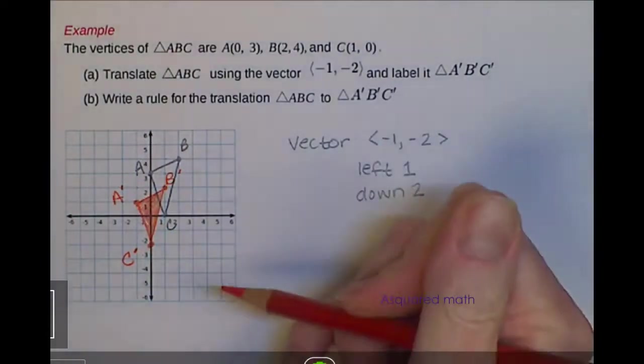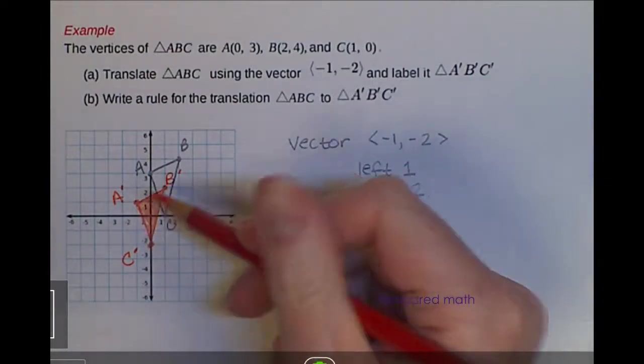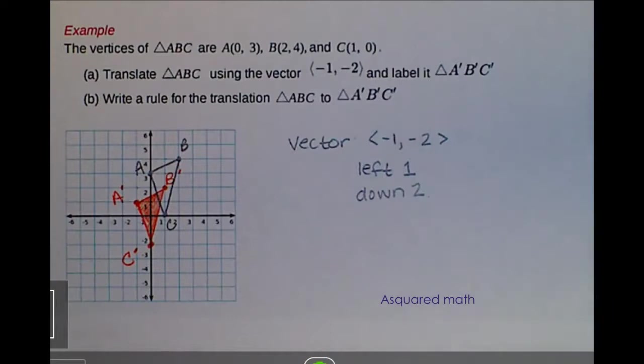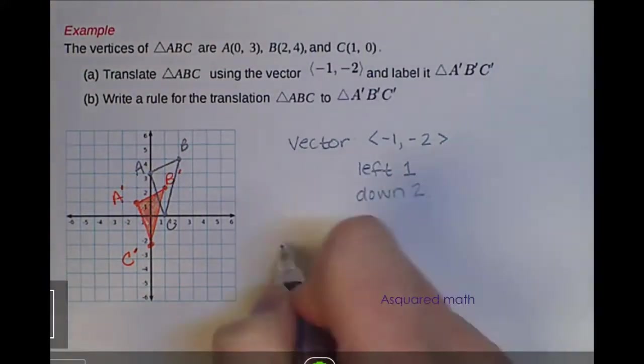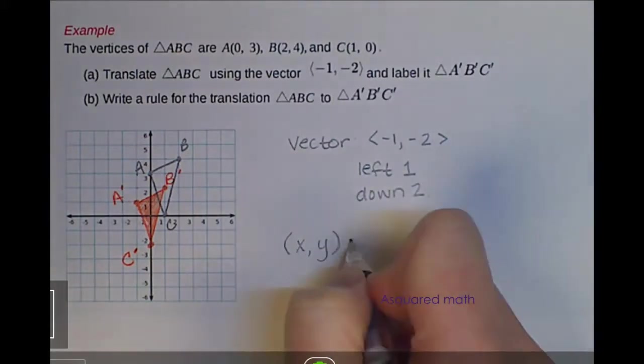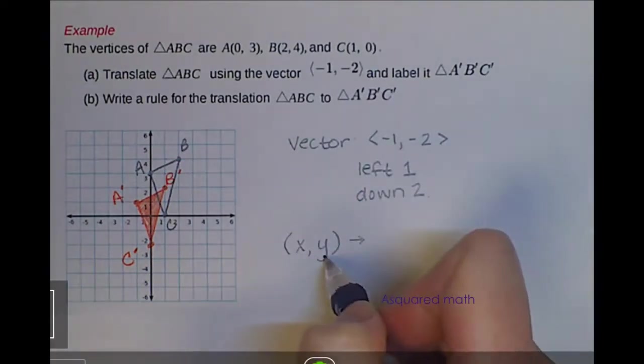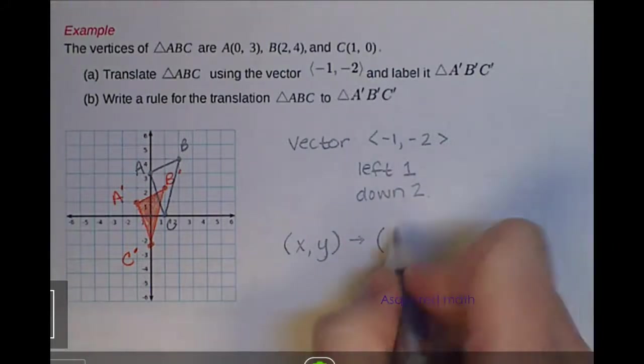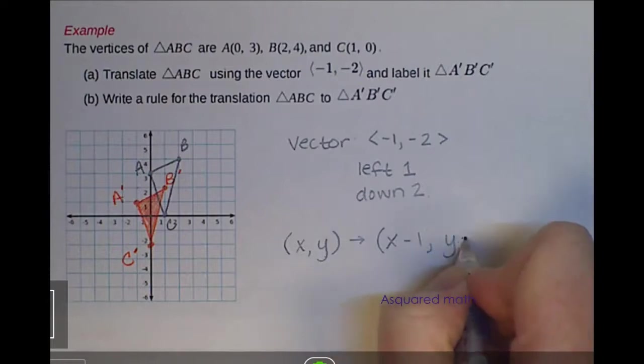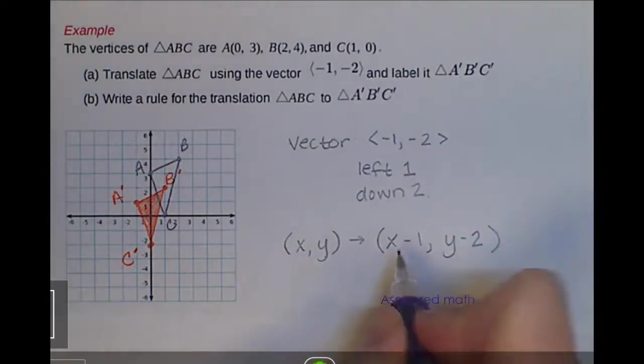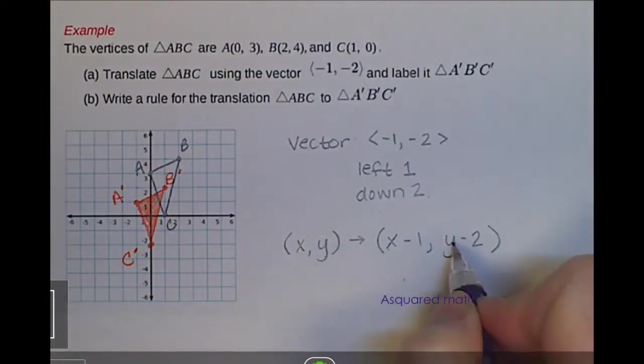And that would be our final image. We've labeled it A'B'C'. Part B asks us to write a rule for the translation from triangle ABC to triangle A'B'C'. So what that is asking us to do is how do we go and just compute each new coordinate point? So this says take our original (x,y) coordinate and convert it into (x-1, y-2). So whatever our original x value is and you subtract 1, you'll have your prime x value. Whatever your original y value is, subtract 2 and you'll end up with your prime point.